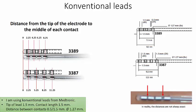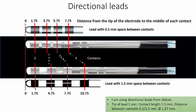When we calculate the location of the electrode, it is of course necessary to know the technical specifications of the electrodes which you are using. I am using conventional leads from Medtronic, where the tip of the lead is 1.5 mm, and the length of the contact 1.5 mm, and depending on the model, separated by 0.5 or 1.5 mm. I am also using the new directional leads from Abbott. Here the tip of the lead is only 1 mm and the contact length 1.5 mm, with the same distance as mentioned regarding the Medtronic electrode.